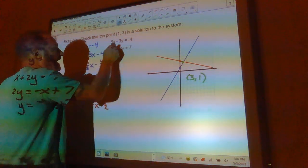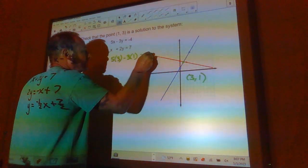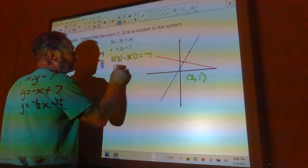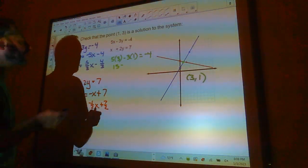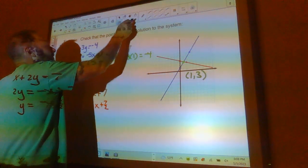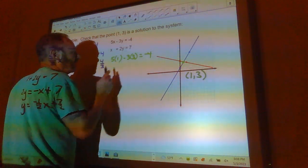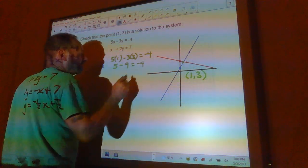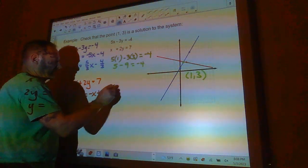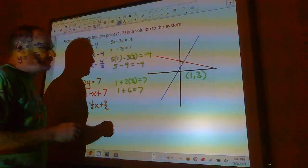So I'm going to put 3 in for X in both these equations and 1 in for Y and see what happens. That would be 5 times 3 minus 3 times 1 should equal negative 4. So 15... Oh, I'm sorry. I got that backwards. It's not (3, 1), it's (1, 3). Let's do that again. So now we get 5 minus 9 is negative 4. That's true. That's why you check things. I made a mistake and I caught my answer. Now I plug it in here. That's going to be 1 plus 2 times 3 should equal 7. Well, 1 plus 6 is 7. And that's also true. So now I feel good about my answer.